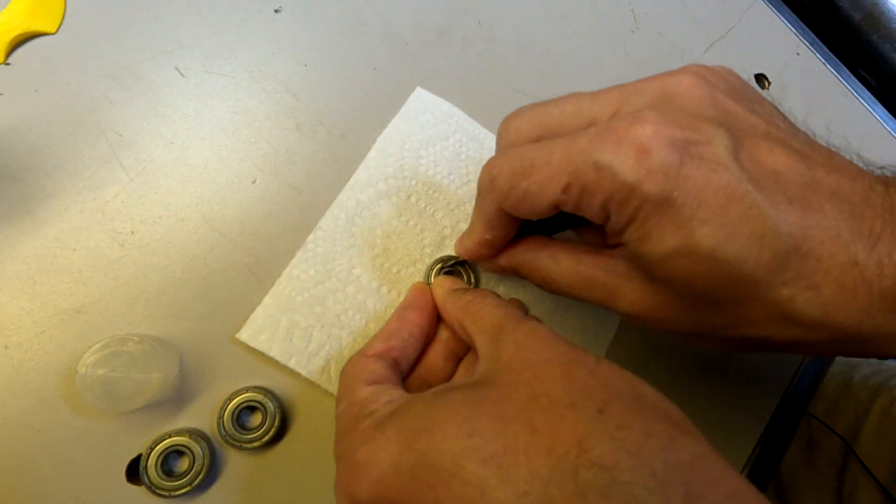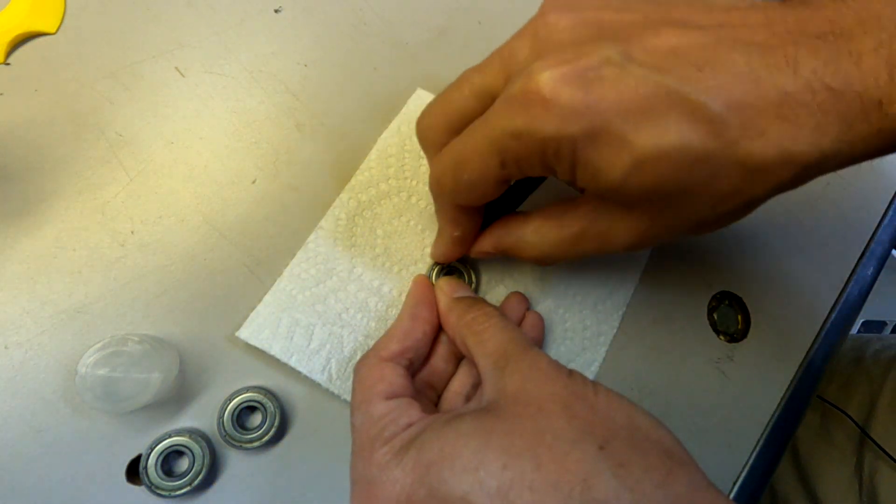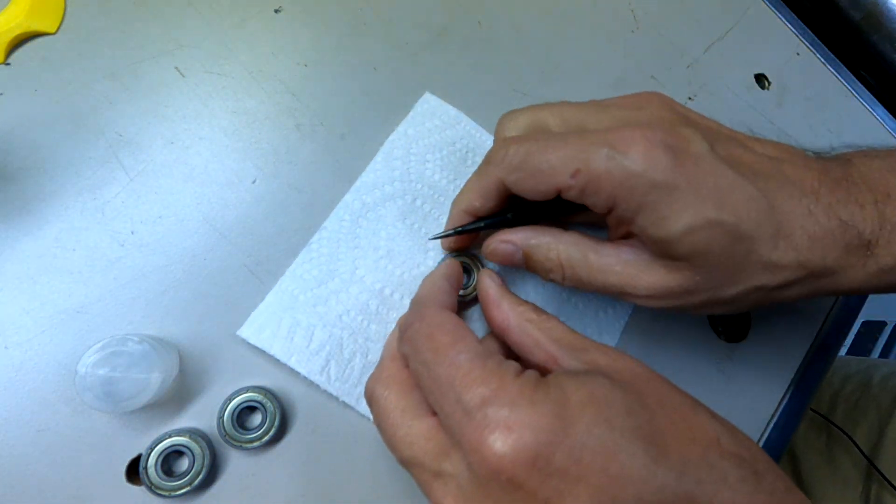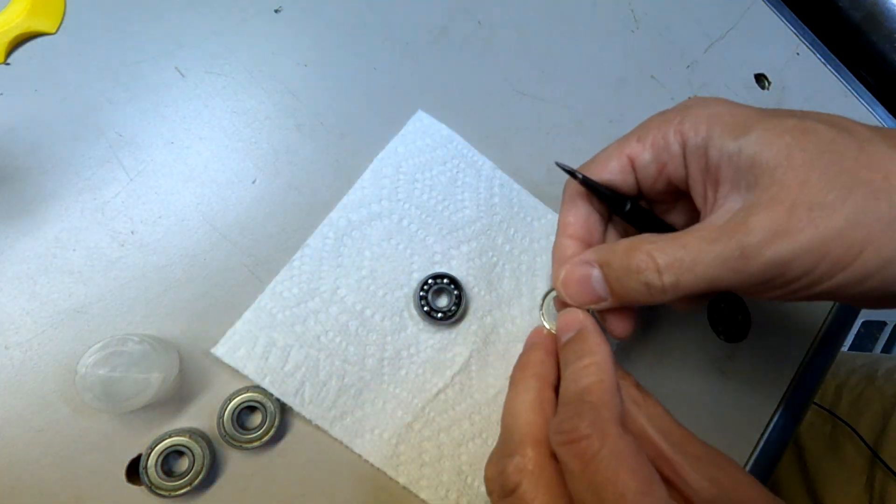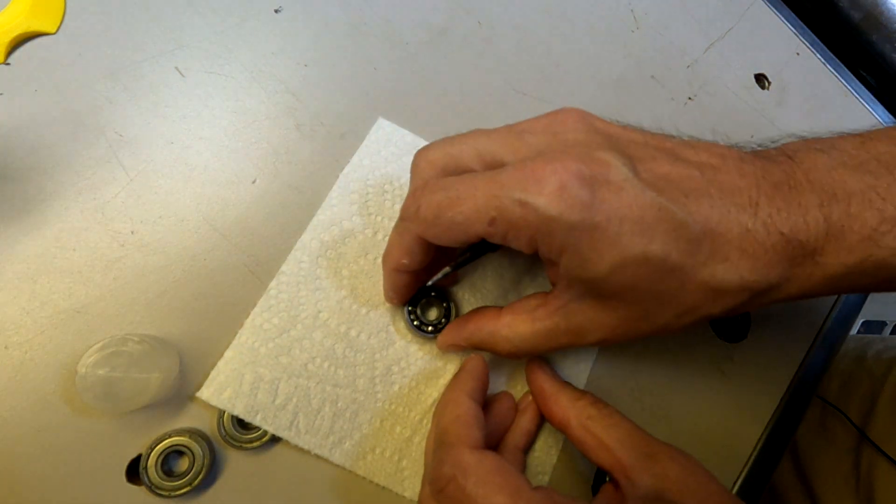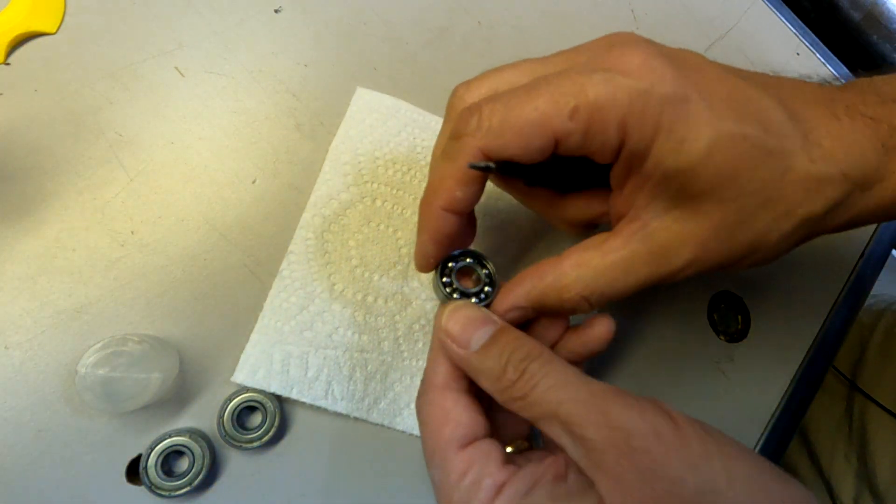So that exposes the inner race and the balls of the bearing. And you do that on both sides being careful not to let your tool slip and poke you in the finger.